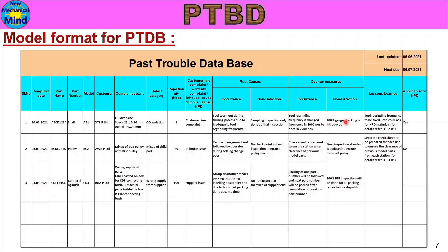Lesson Learned is also recorded as a reference in a separate format. This lesson learned is then applied to new products to confirm it is not repeated. The Past Trouble Database format represents the minimum requirement and should be updated regularly — weekly, monthly, every 3 months, or every 6 months.